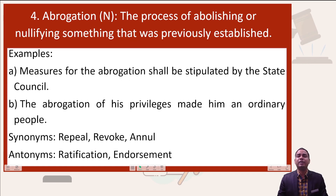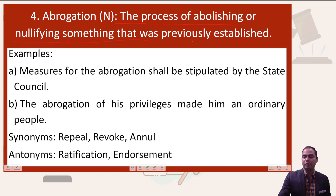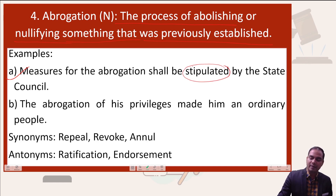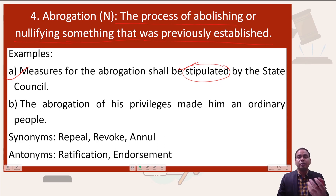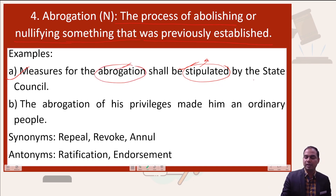The second-last word in the list is abrogation. Abrogate means to abolish or end something. So abrogation is the process of abolishing and nullifying something that was previously established. For example: measures for the abrogation shall be stipulated by the state council. Here, stipulate means to mention something as a necessary condition — as in a contract where conditions are clearly written down. So the measures of abrogation should be stipulated by the state council.